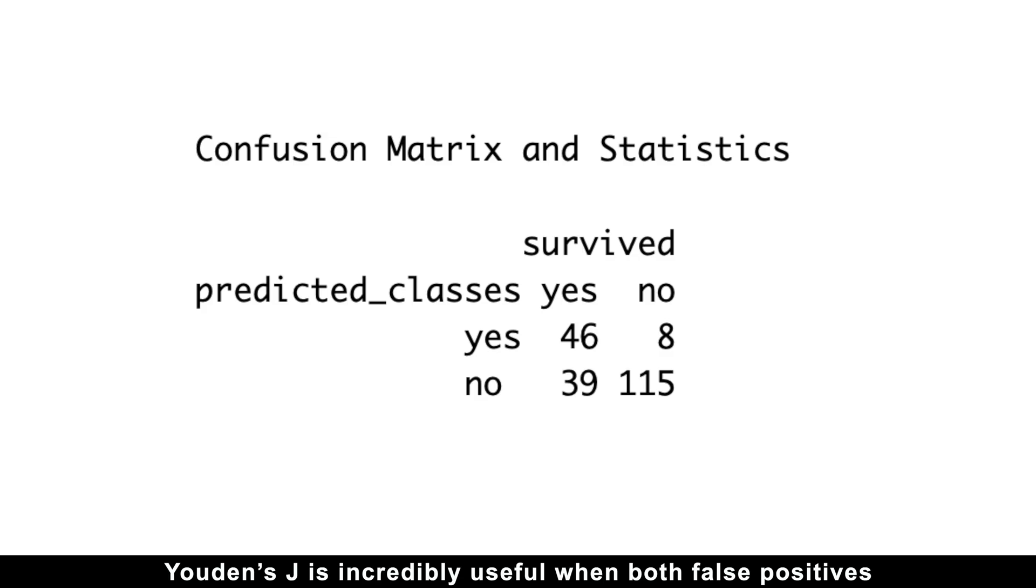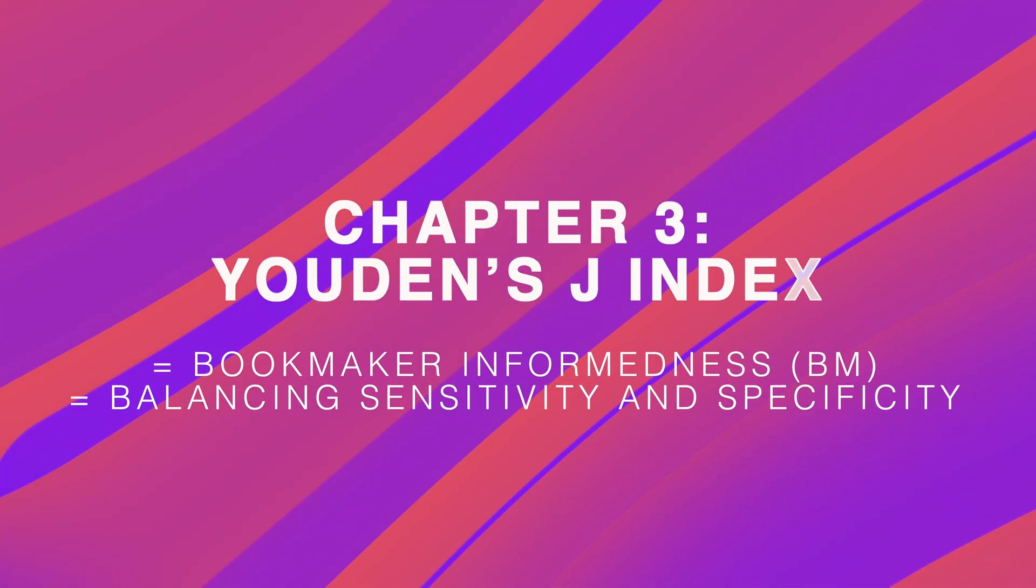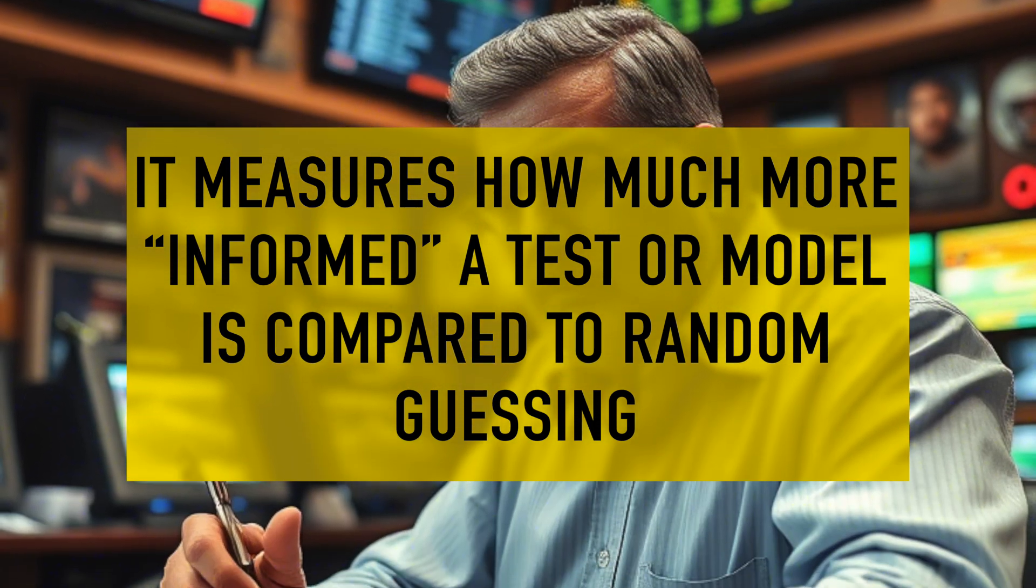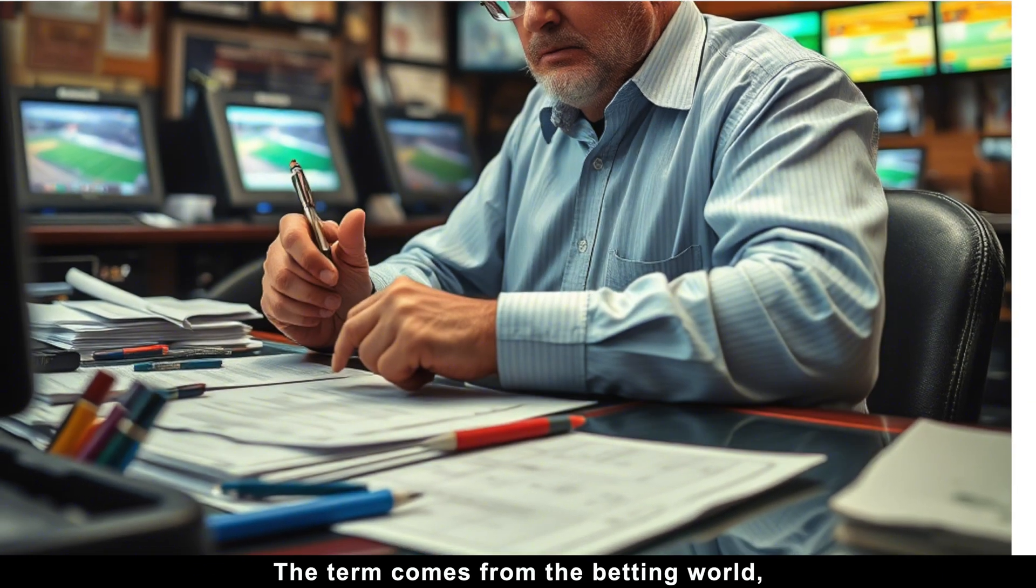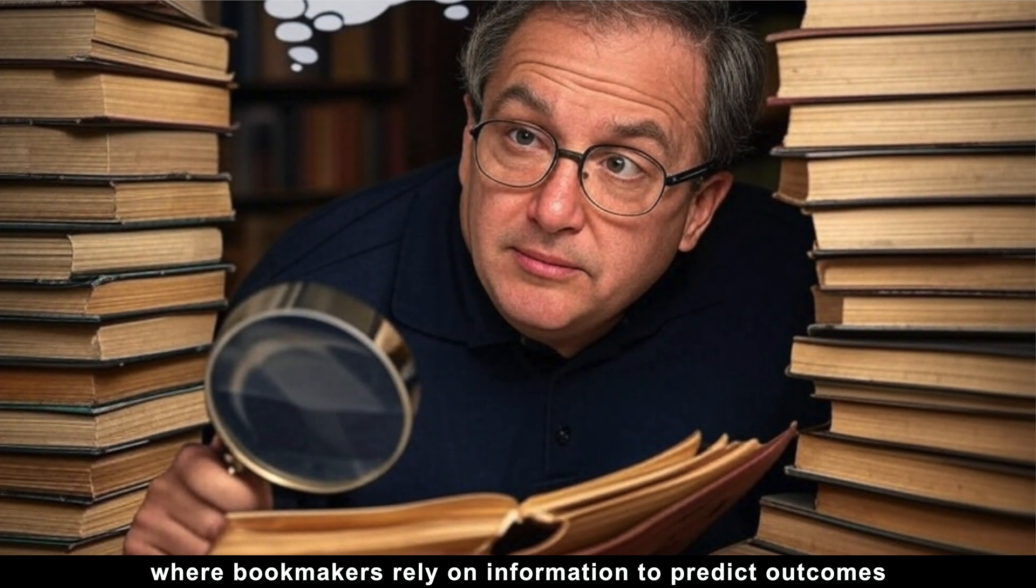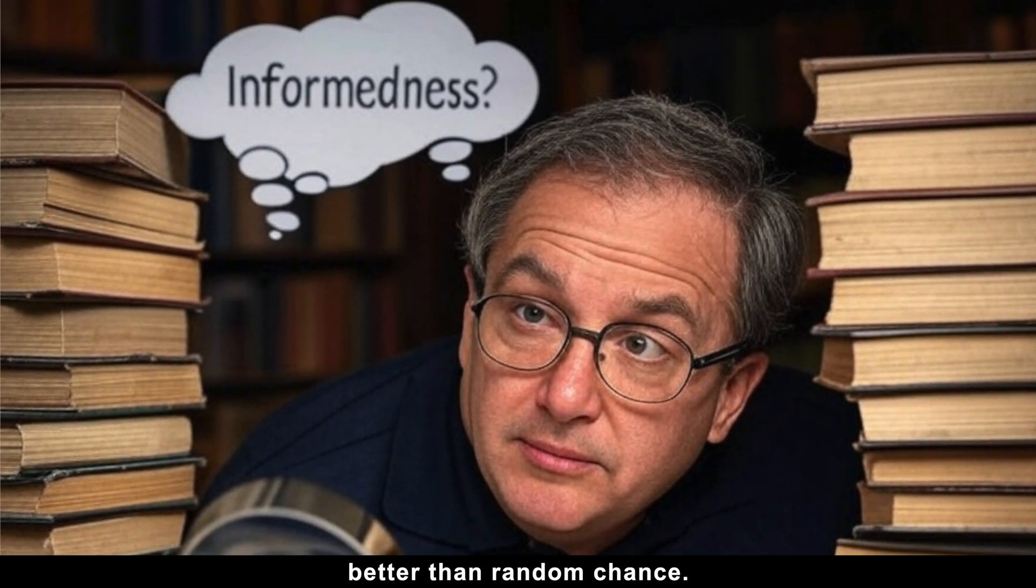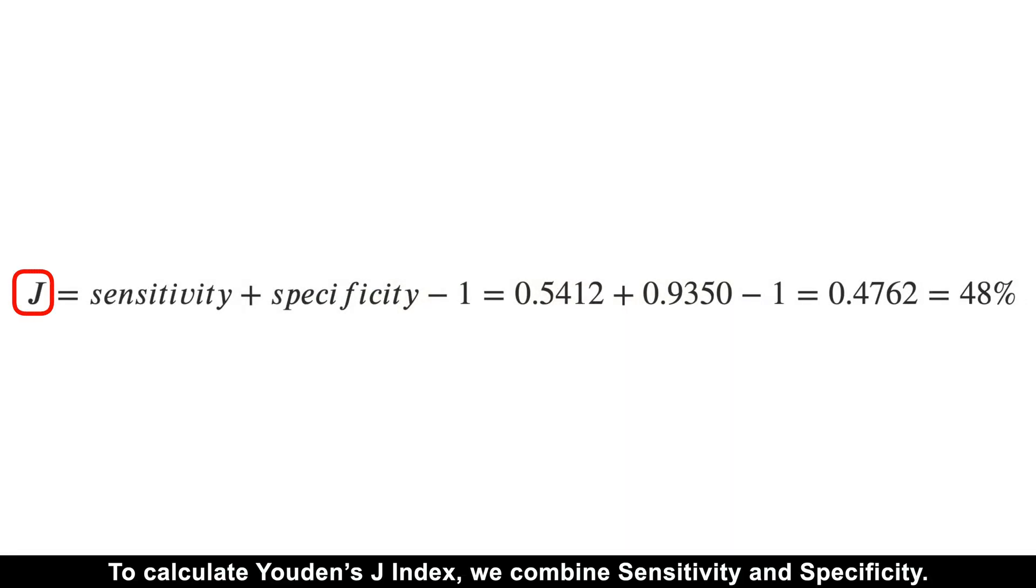Youden's J is incredibly useful when both false positives and false negatives carry significant consequences. That's why Youden's J index maximizes true positives and minimizes false positives. Fun fact: Youden's J index is also known as bookmaker informedness because it measures how much more informed a test or model is compared to random guessing. The term comes from the betting world, where bookmakers rely on information to predict outcomes better than random chance.